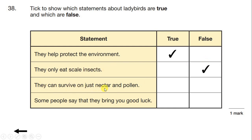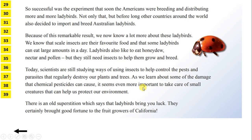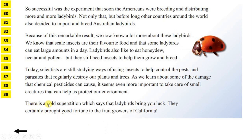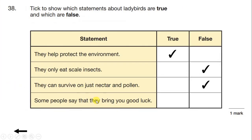'They can survive on just nectar and pollen' — the text says they like to eat nectar and pollen, but they still need insects to help them grow and breed. So they can't only eat nectar and pollen — this third statement is false as well. Finally, 'some people say that they bring you good luck' — at the end of the text, it says there is an old superstition which says that ladybirds bring you luck. A superstition is something that people believe even though there's not strong evidence for it, but ladybirds bringing luck is something some people believe. So the last statement is true.